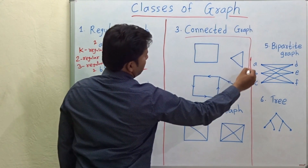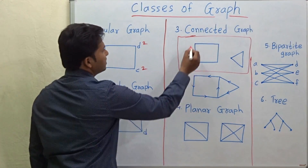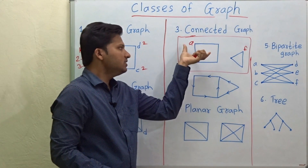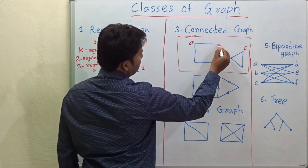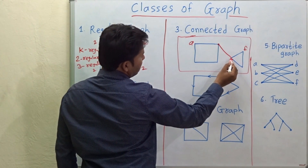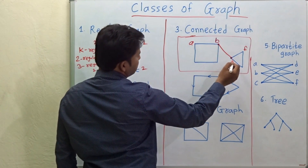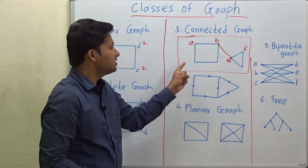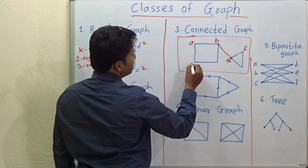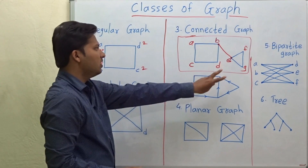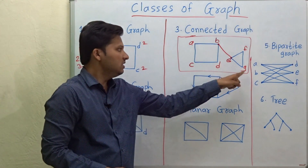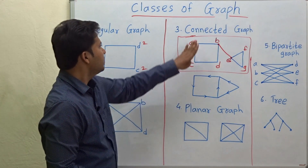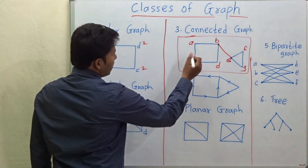Now let's look at connected graphs. Suppose this is vertex A and this vertex is F — there is no path from A to F because the connection is missing. But if you connect these two vertices with an edge — say vertex B and vertex E — and you join B and E, then this graph becomes a connected graph. Now from every vertex there is a path to every other vertex. For example, from C to G there is a path. You can start at any vertex and reach any other vertex. This is called a connected graph, and this applies to undirected graphs.